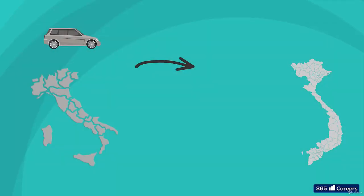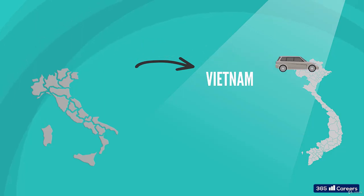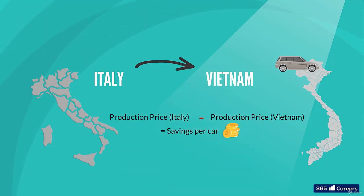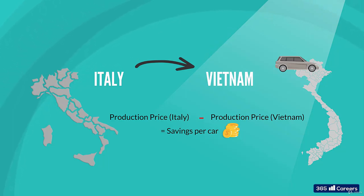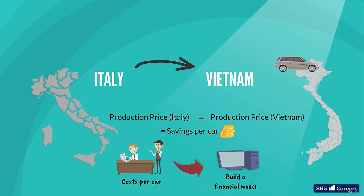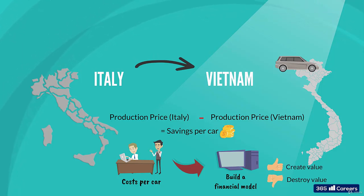The main source of income the company would expect to generate from this endeavor is savings derived from the cheaper production of automobiles. We'll compare the end price of one car produced in Italy and the end price of one car produced in Vietnam. The difference between the two gives us the actual savings per car. Our operations and controllership teams have done the heavy lifting, estimating the costs per car. It is our task to model the rest and come up with a conclusion that tells us whether the project generates or destroys value.